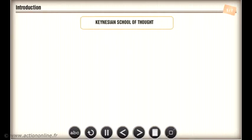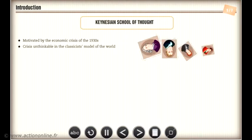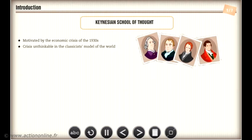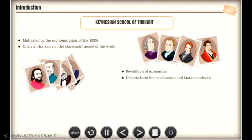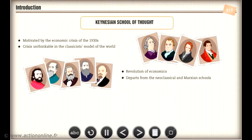The Keynesian school of thought was motivated by the economic crisis of the 1930s, a crisis that the classicists had failed to predict and that was unthinkable in their model of the world. This theory is often described as the revolution of economics. It departs significantly from the neoclassical school although, unlike the Marxian school, it rejects neither liberalism nor the capitalist system.